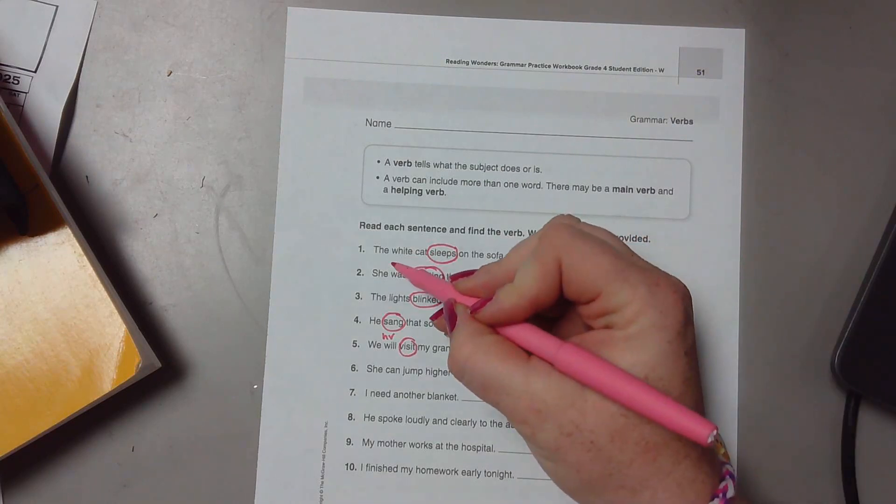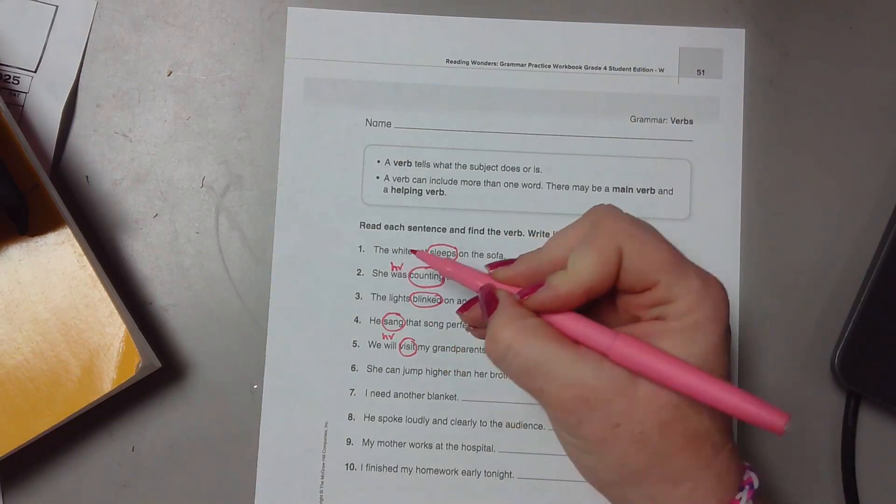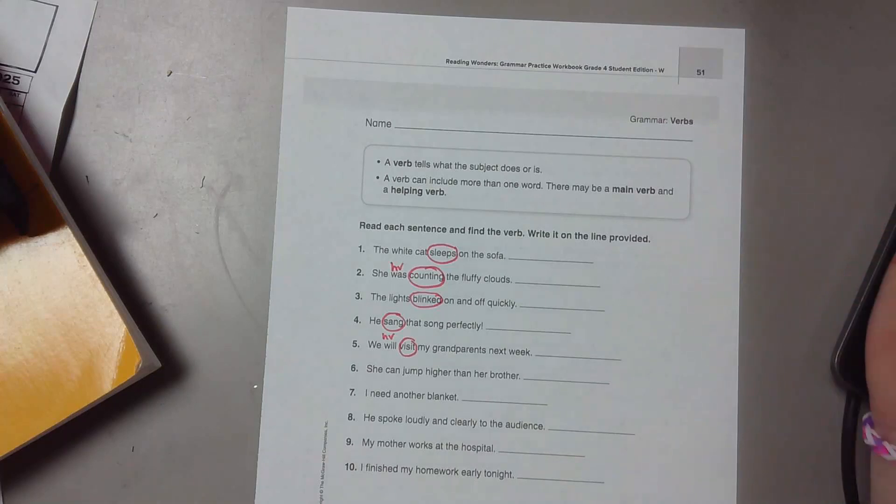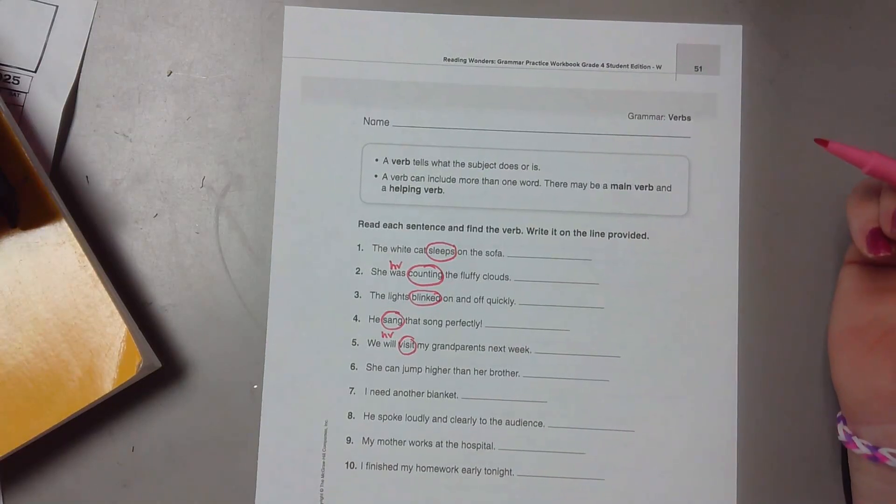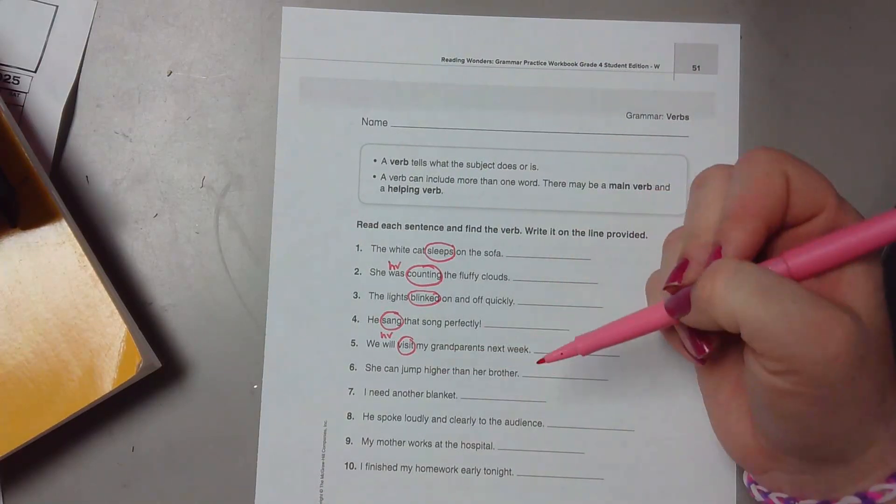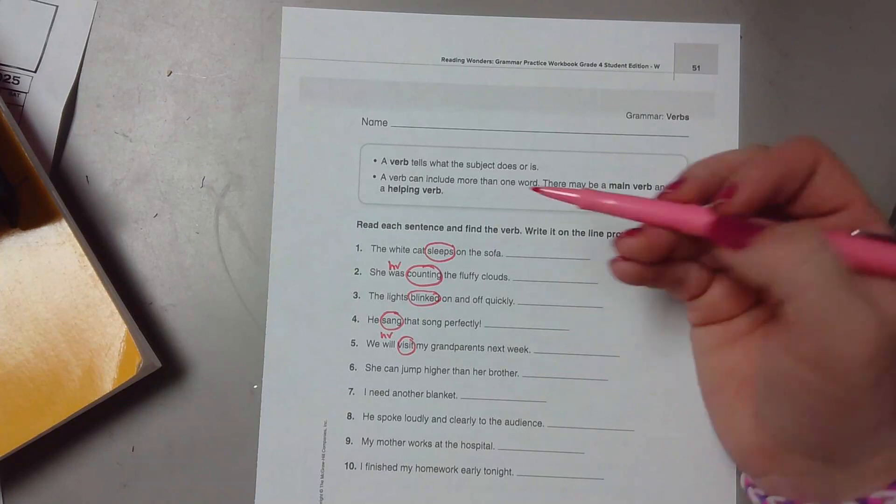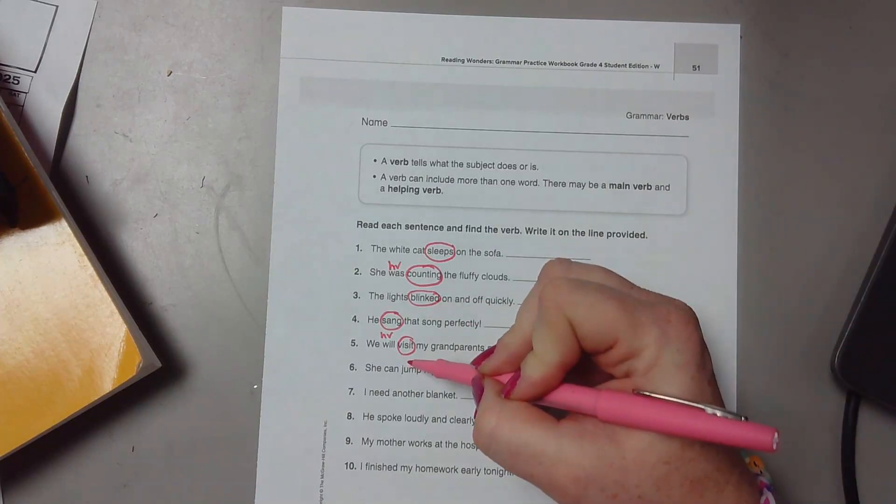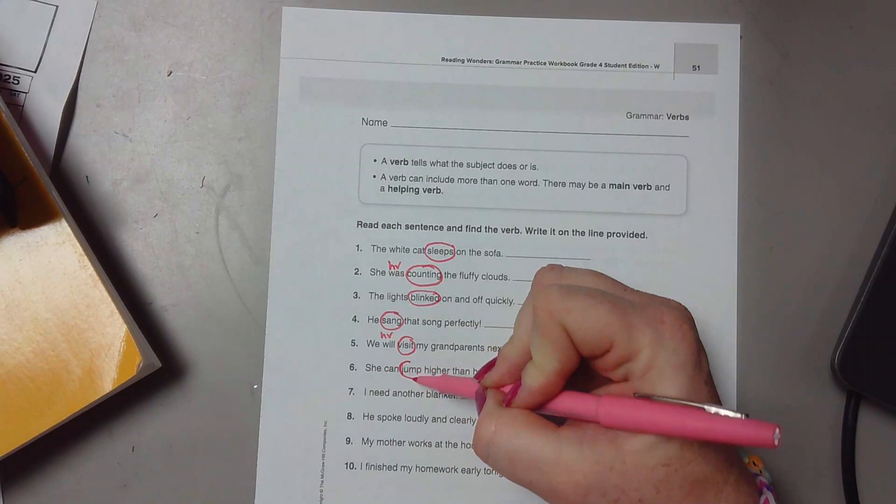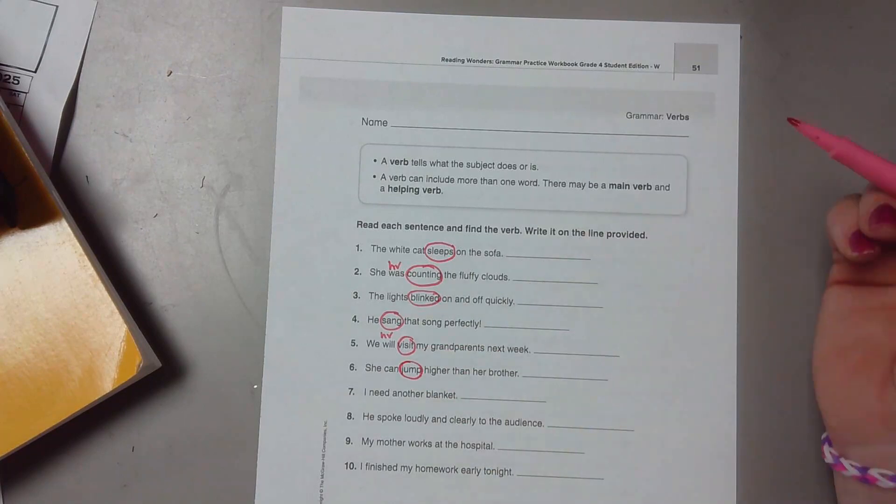Actually, we missed a helping verb on two. She was counting. Was was the helping verb. Number six: she can jump higher than her brother. Jump.